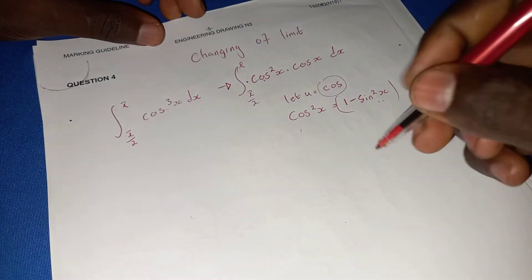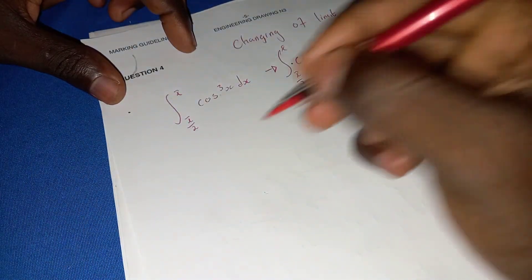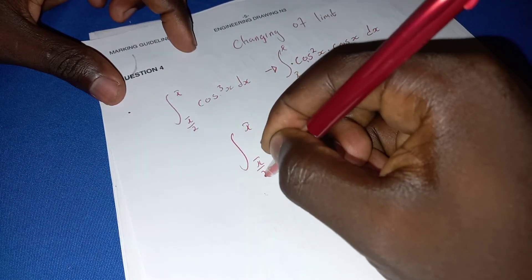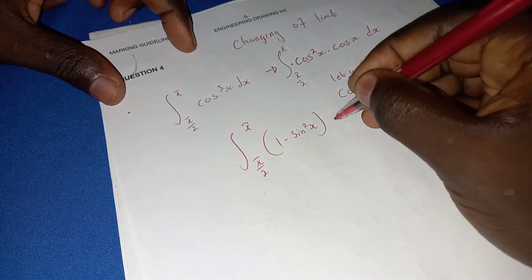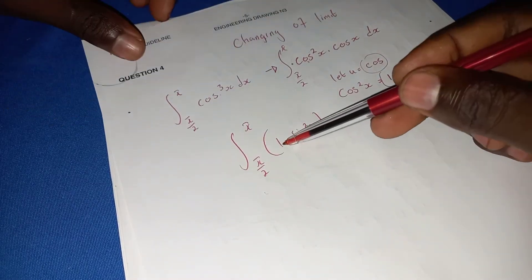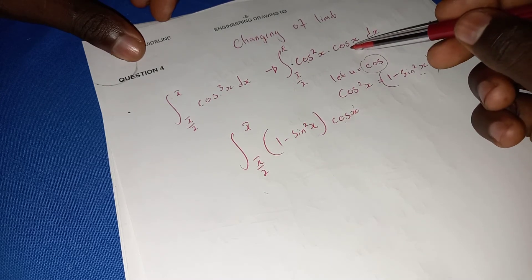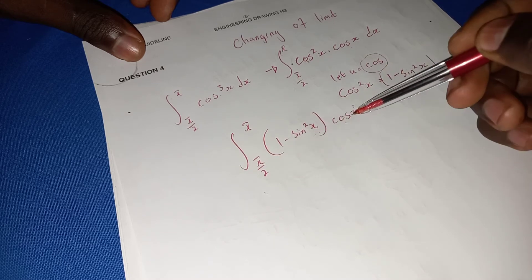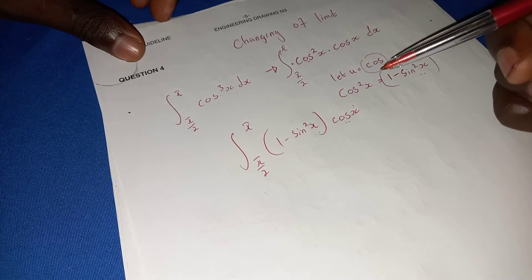Let's write the equation with enough space. The integral from pi/2 to pi of (1 minus sin²x) times cos x. This is still equal to cos²x times cos x, which multiplies to give cos³x — confirming the split is correct.